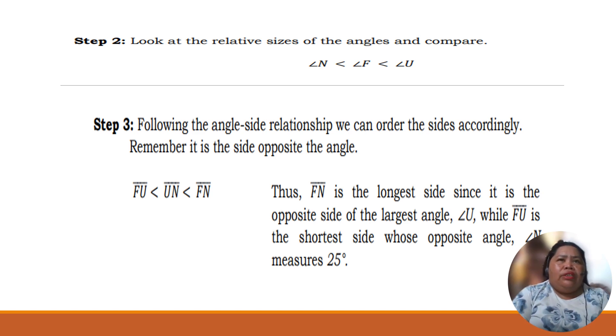Now, look at the relative sizes of angles and compare. So we can say that angle N is less than angle F, and angle F is less than angle U. Now, step 3. Following the angle-side relationship, we can order the sides accordingly. Remember, it is a side opposite of an angle. That's why we use this symbol of sides. Segment FN is the longest side since it is opposite of the largest angle, angle U, while FU is the shortest side since it's opposite of angle N which measures 25 degrees.